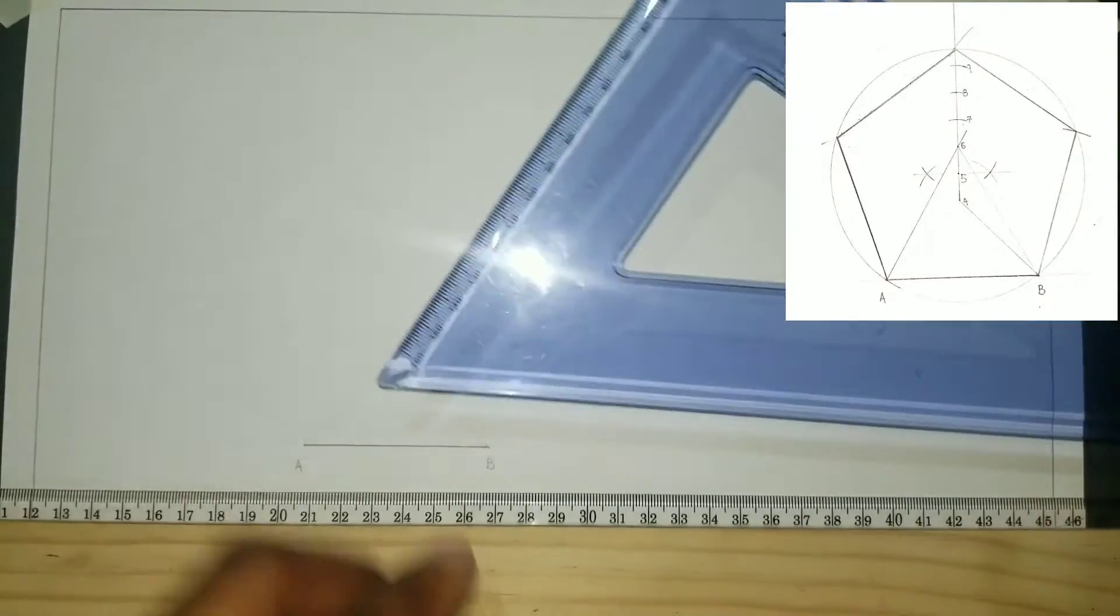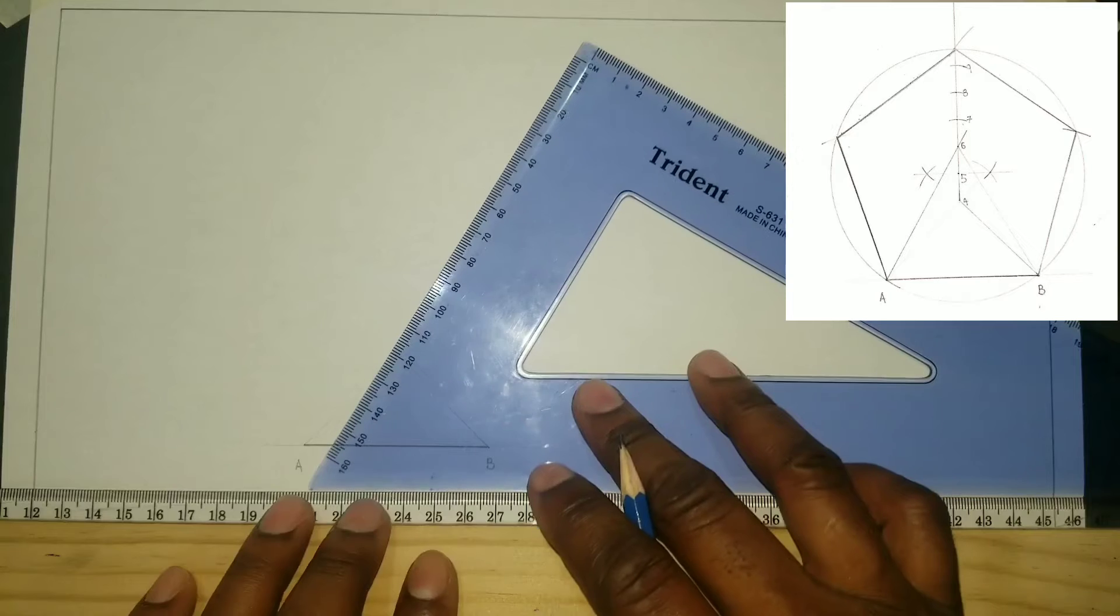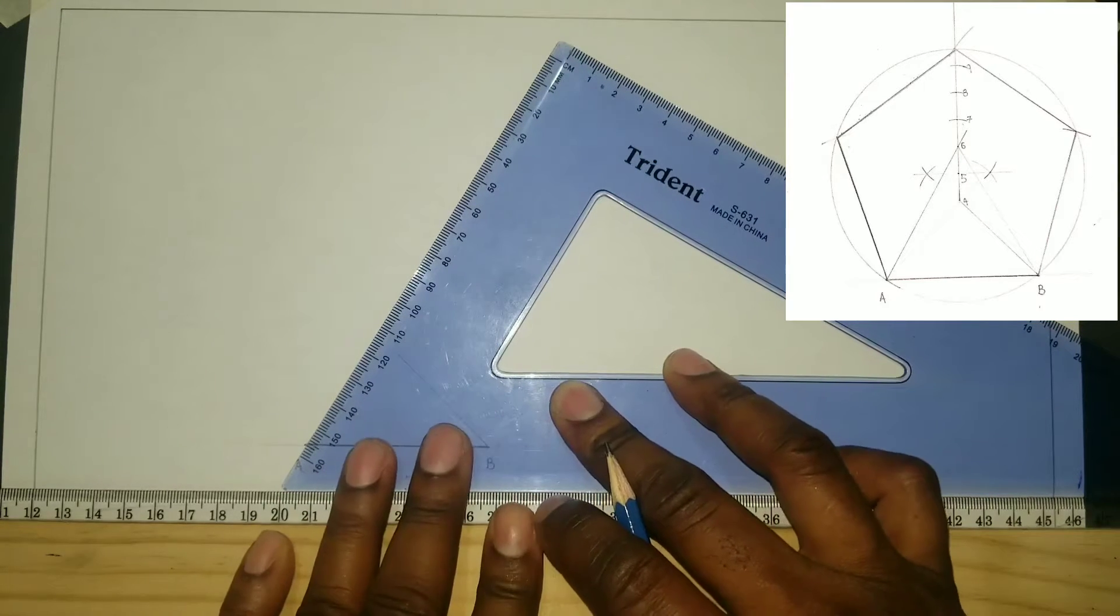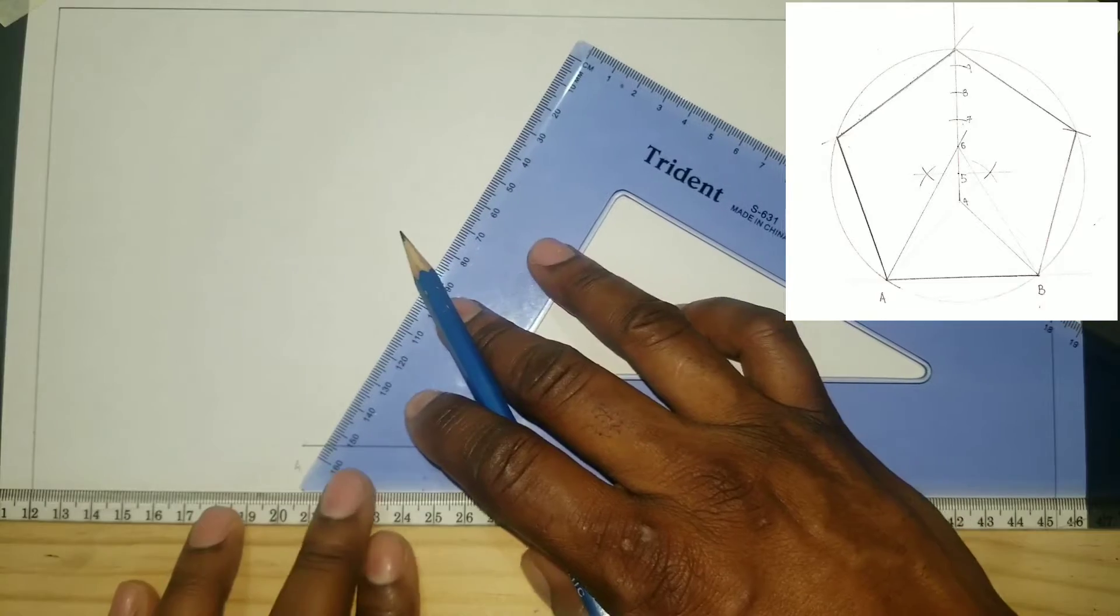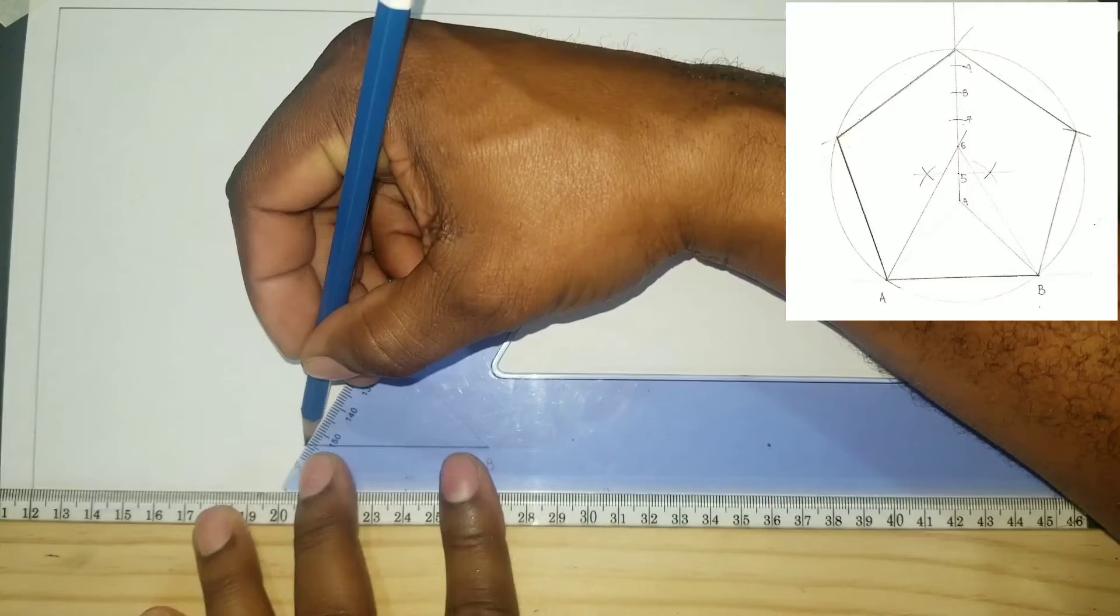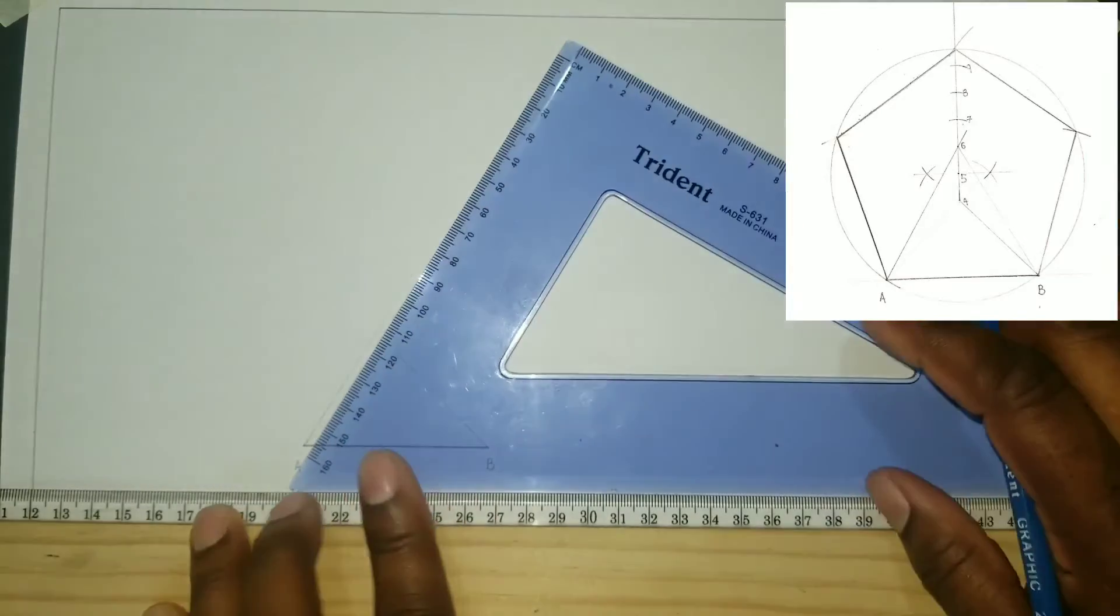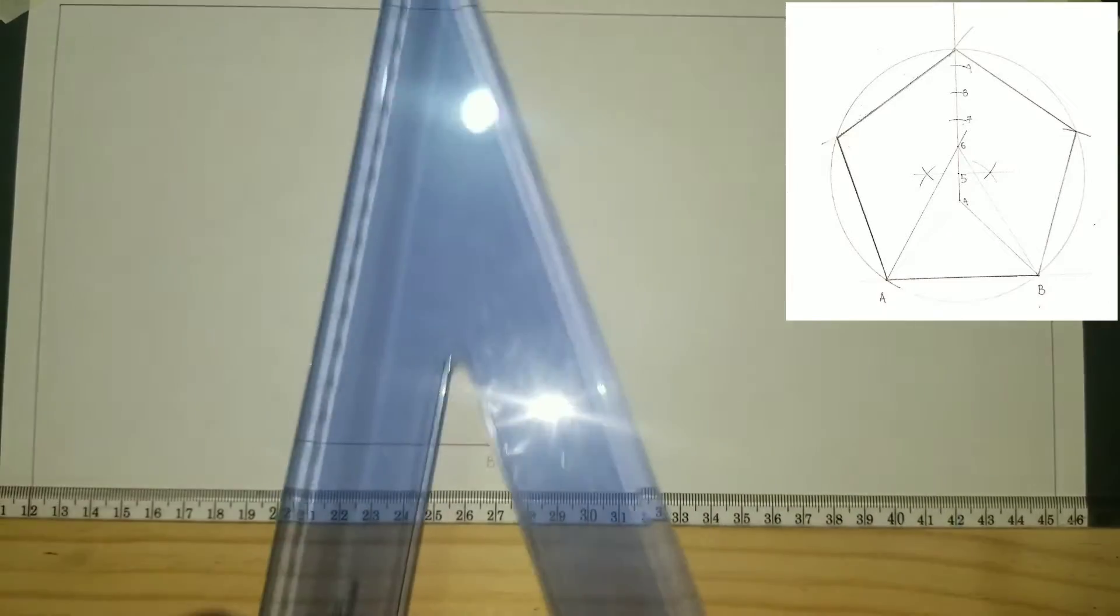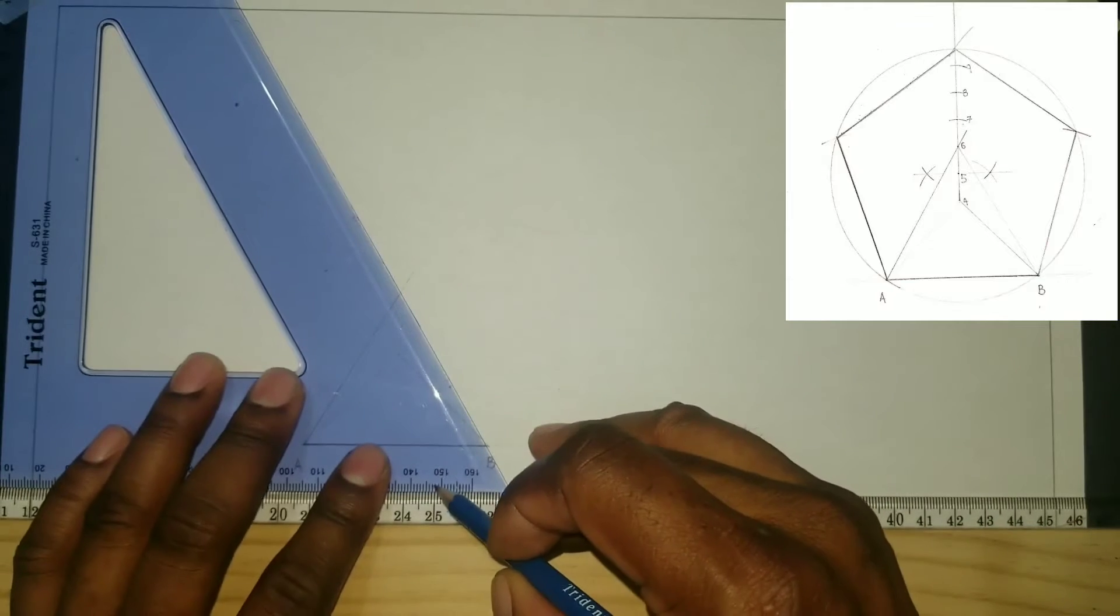The same will be repeated but with the 60-30 set square. We will use the 60-degree angle and we will draw a line from A upward and also from B. We will turn our set square and now use this 60 side.